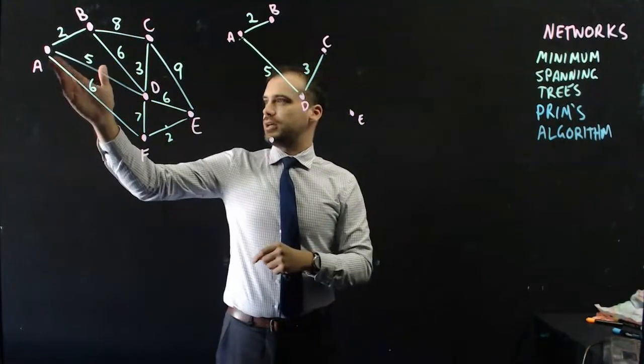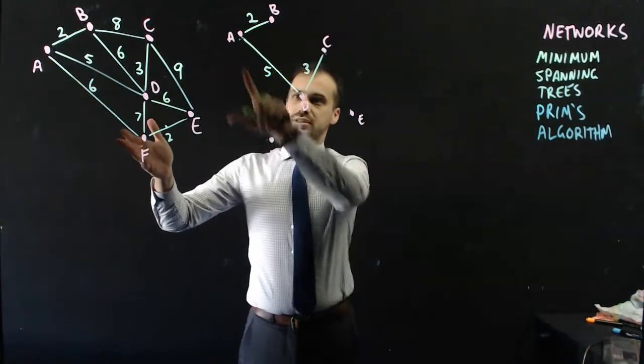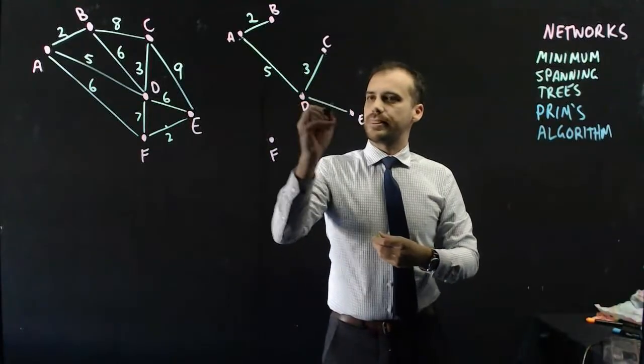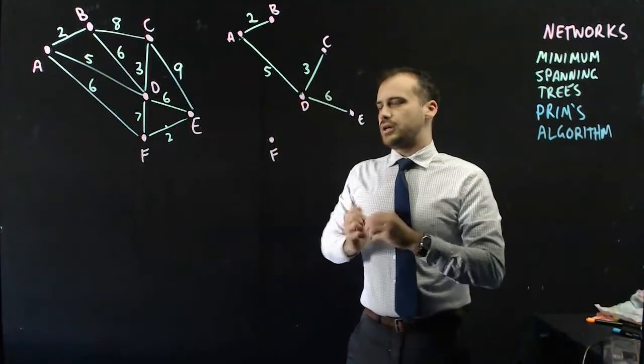I've got choices here. I can do A to F, which is a 6, or I can do D to E, which is a 6. Let's go D to E.